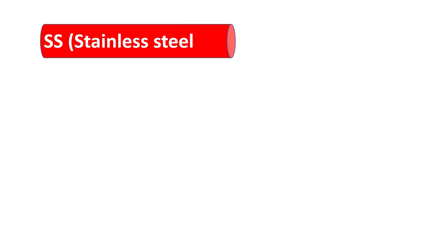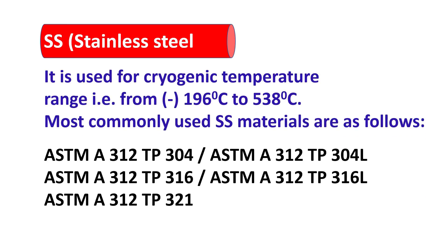SS — stainless steel. It is used for a temperature range from minus 196 degrees Celsius to 538 degrees Celsius. Most commonly used SS materials are as follows: ASTM A312 TP304, ASTM A312 TP304L.